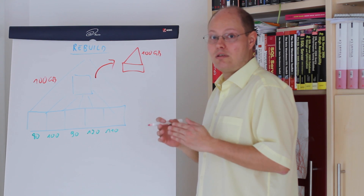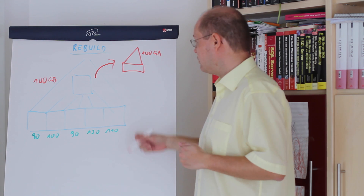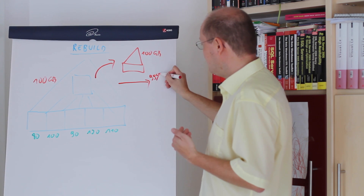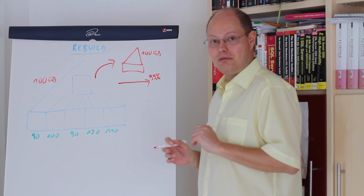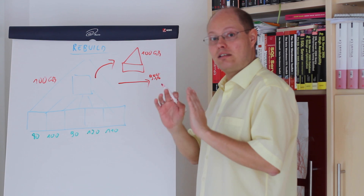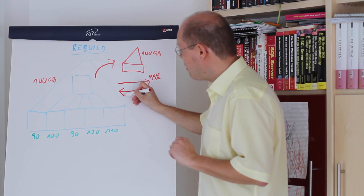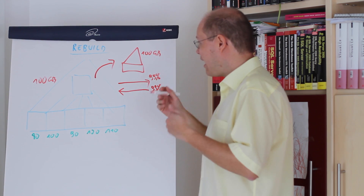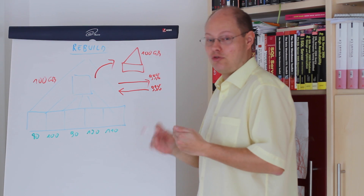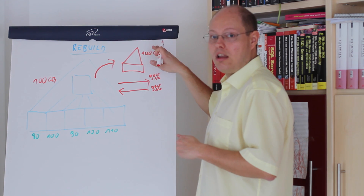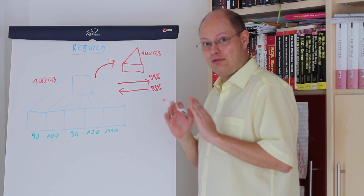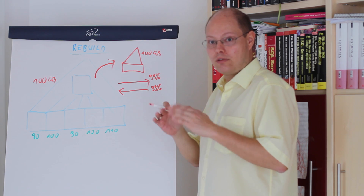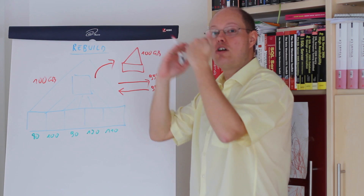A rebuild is just one large transaction, which means if you have the transaction completed at 99% — maybe Friday afternoon you want to go home and you cancel the index rebuild — SQL Server has to perform a large rollback. You're undoing the whole index rebuild operation, which generates additional overhead in your transaction log. So when you want to cancel a rebuild, you're just doing the same work you already did, just in the opposite direction.